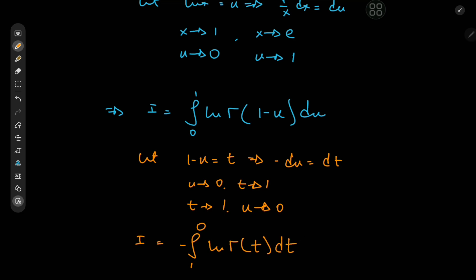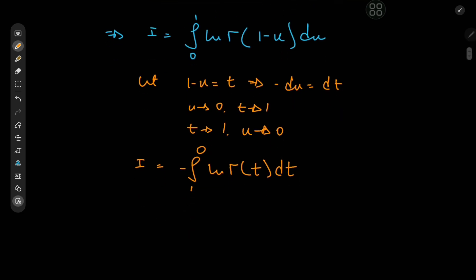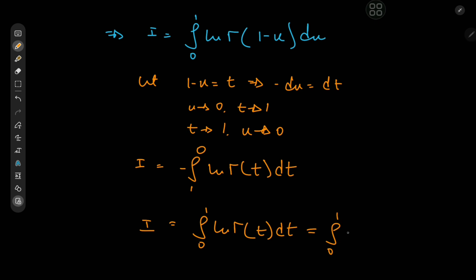Of course, we can switch the limits of integration and get rid of the extra negative sign, giving I = ∫₀¹ log·Γ(t) dt. Whatever you call the dummy variable doesn't matter, so we can rename this as ∫₀¹ log·Γ(u) du.